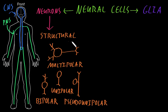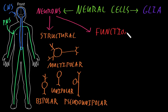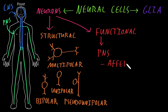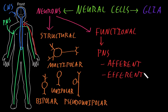In addition to dividing neurons by structural types, we can also divide them into different functional types. In the peripheral nervous system, we can divide functional types of neurons into two big categories called afferent and efferent. Afferent neurons carry information from the periphery in toward the central nervous system, while efferent neurons carry information from the central nervous system out toward the periphery — so they carry information in different directions.